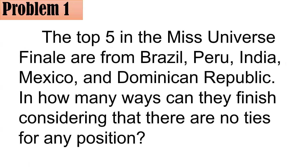Problem 1: The top five in the Miss Universe finale are from Brazil, Peru, India, Mexico, and Dominican Republic. In how many ways can they finish, considering that there are no ties for any position? The fact that there are no ties means there's only one Miss Universe — it's impossible to have at least two people in a certain position. For example, having two first runner-ups is not allowed. So they are all different.